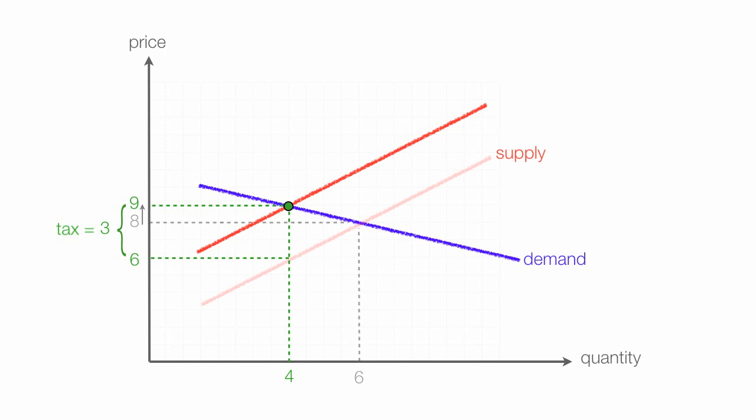It turns out total tax revenues can be defined as that green rectangle, and it happens to be 12. I take the height, which is 3, and width, which is 4. Let me show you that, actually. I take the tax of 3 times the quantity of 4, which is equal to 12, and that's our total tax revenues.